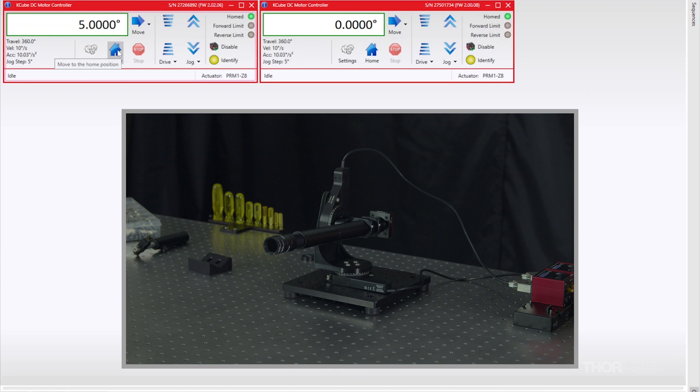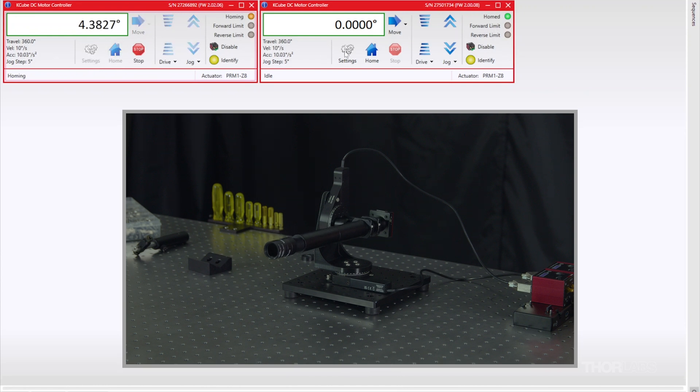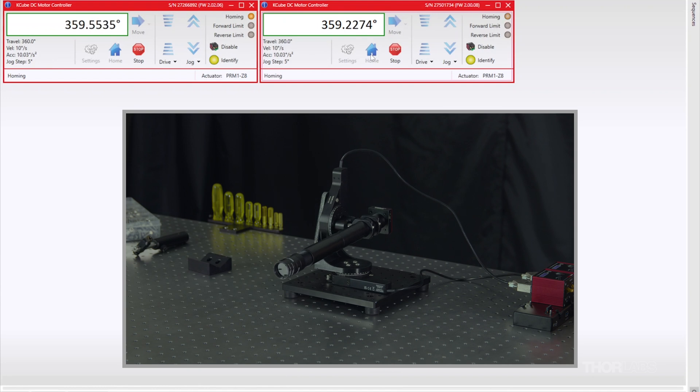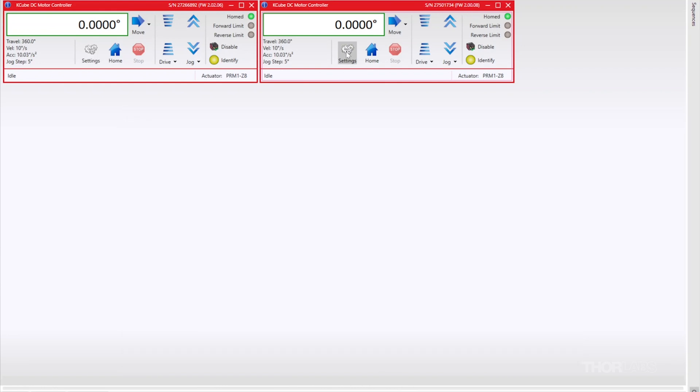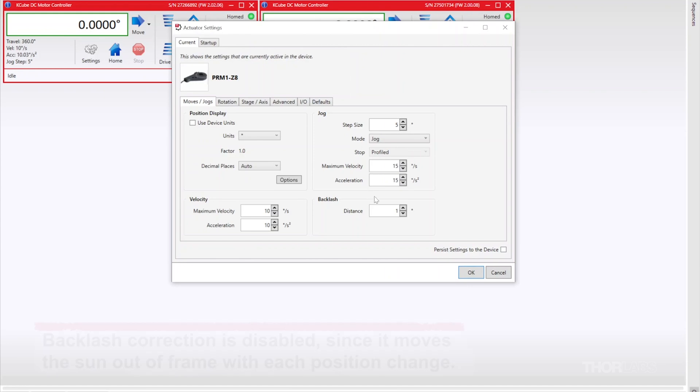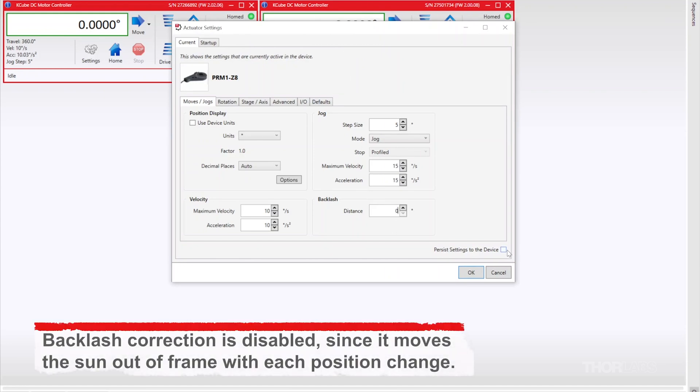I'm going to home both stages. Next, I want to disable the backlash correction in both axes. And I'm going to persist settings to device so that way it's retained on the K-Cubes.